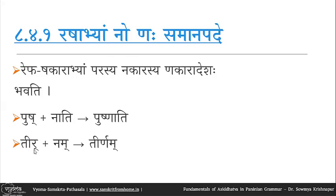Similarly, teernam — the tru dhatu with the ktha pratyaya (nishtha), where the pratyaya gets nakaradesha and there are itva and upadhadirga operations on the dhatu, giving teer-nam at a certain stage. Again, repha is immediately followed by nakara, and nakara is converted to nakara to give teernam. These are examples of rashabhyam nona samanapade where nakara is immediately preceded by shakara or repha.